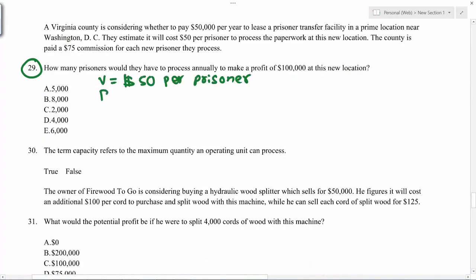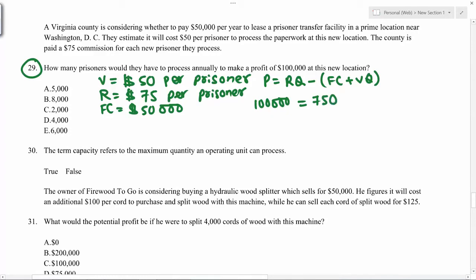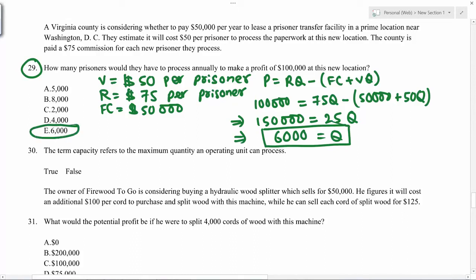You have variable cost. You have revenue of $75. Fixed cost is $50,000. So the formula is profit equals revenues per prisoner times number of prisoners minus fixed cost and variable cost times number of prisoners. So $6,000 is the correct answer.